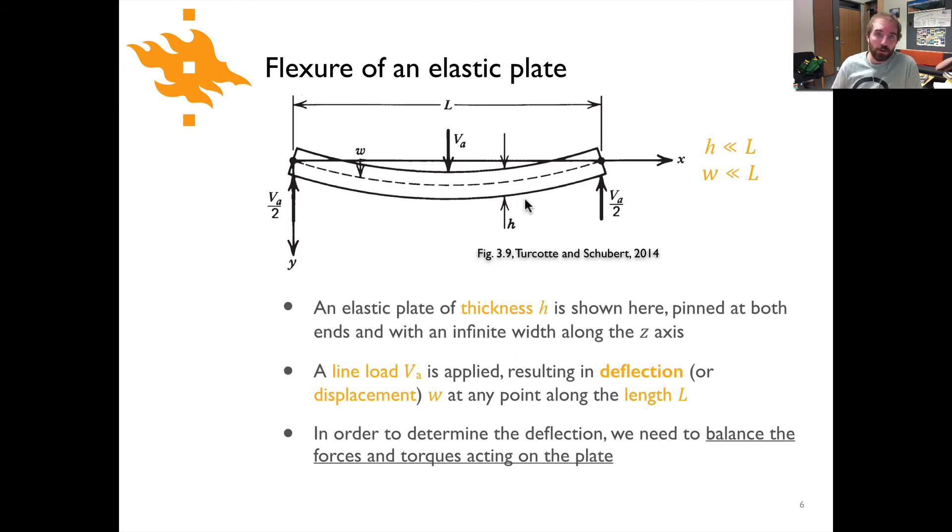For the moment though, we can turn our eyes to the top figure here showing some plate of length L that is experiencing in this case a line load VA. This vector that's pointed down here is some load, some force pushing down in the middle of this plate. The plate has a thickness H, which is shown between the two arrows, and H is much smaller than its length.